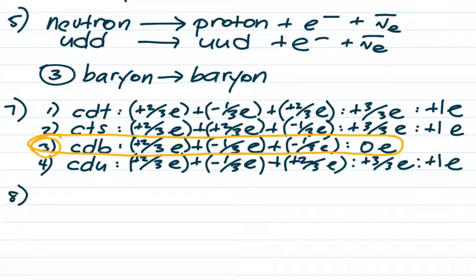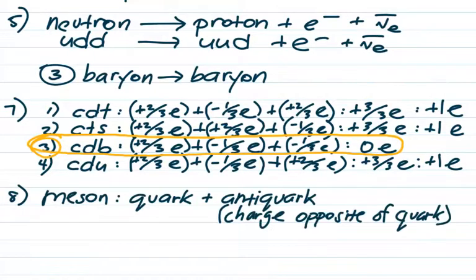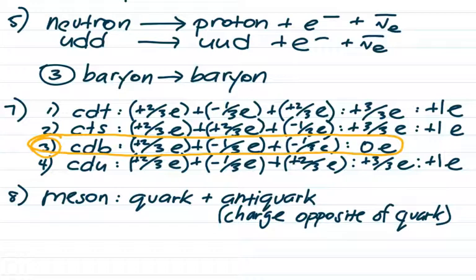Number eight is about a meson: which charge is not possible for a meson? A meson is a quark and an anti-quark, and an anti-quark has the charge opposite that of a regular quark. No matter how you combine the quarks — whether up, charm, or top, or down, strange, or bottom — you can only make negative one, zero, or plus one. It is not possible to make plus two. So a meson cannot have a charge of plus two. With a quark and an anti-quark, it's just not possible. So plus two e is not possible.